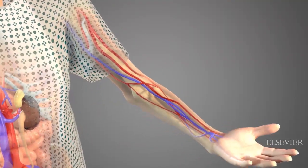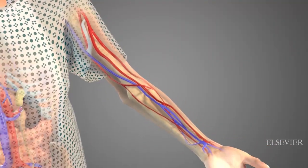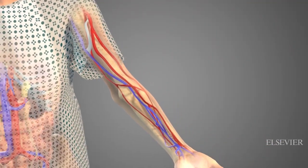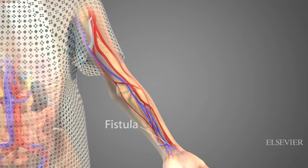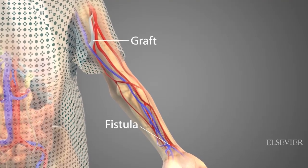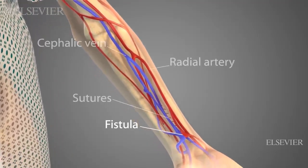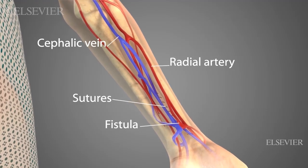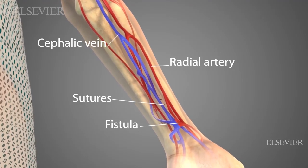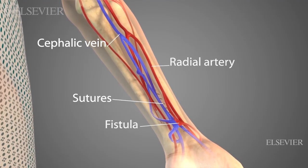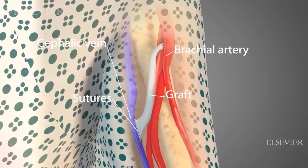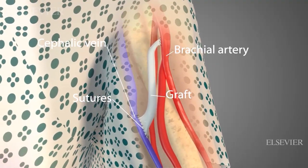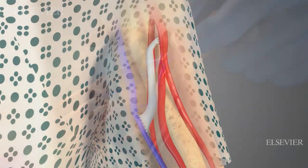Hemodialysis typically requires long-term vascular access through an arteriovenous or AV fistula or graft. An AV fistula is a direct connection made surgically between an artery and a vein. An AV graft is an indirect connection, usually with tubing, between an artery and a vein.